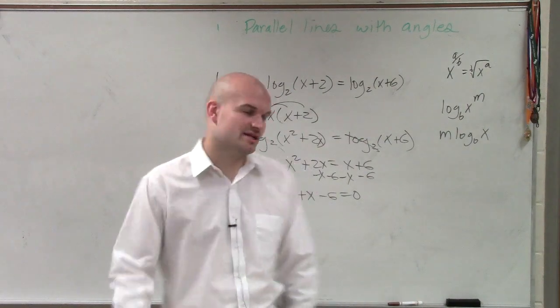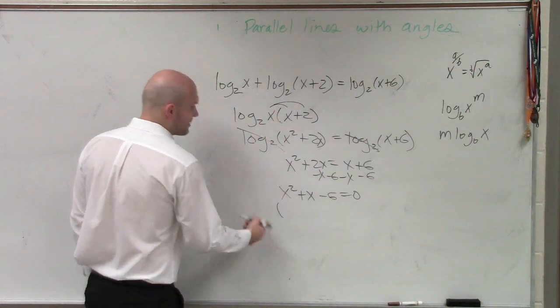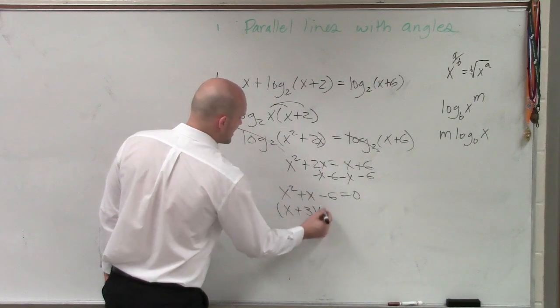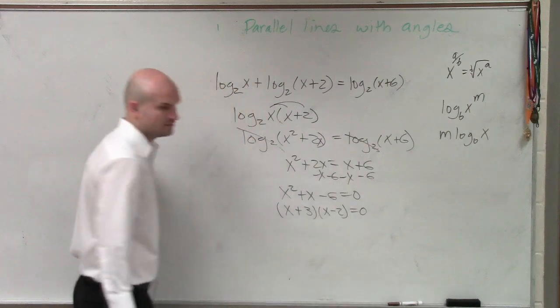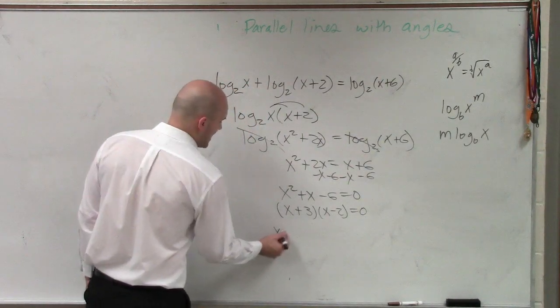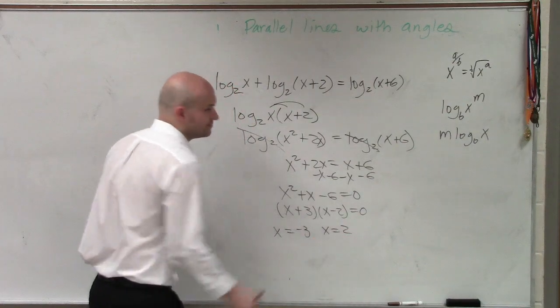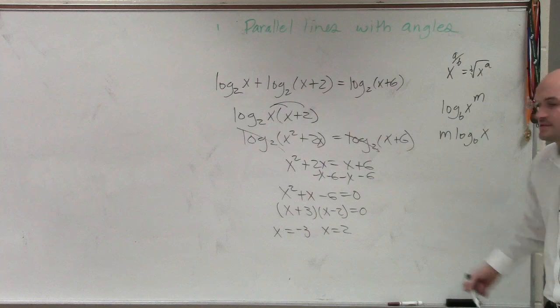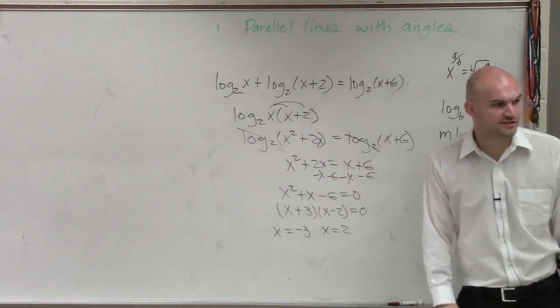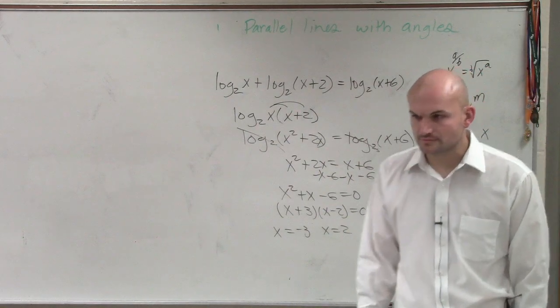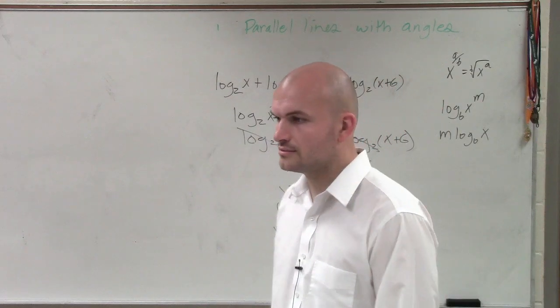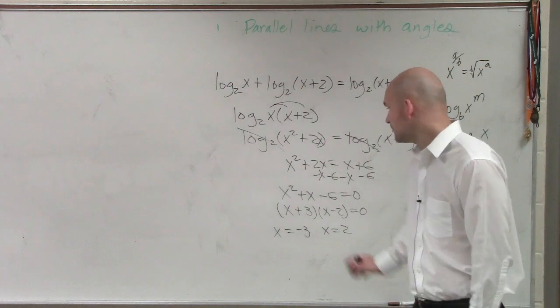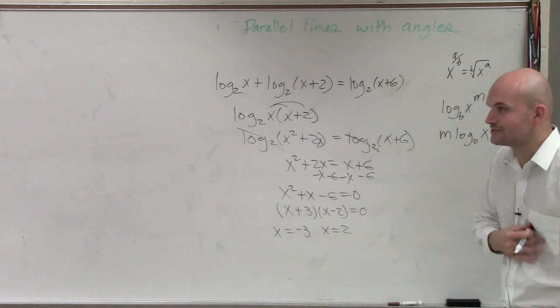So now you have this, so now we need to factor this. And so you guys remember, I gave you guys a lot of factoring problems. You guys need to know how to get through this real quick. So this would be x plus 3 times x minus 2 equals 0. Right? So therefore, x equals negative 3, x equals 2. So therefore, we factor this down to these two zeros. So now what we have is we have x equals negative 3, x equals 2.